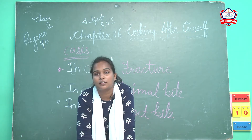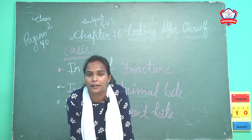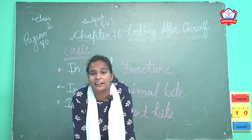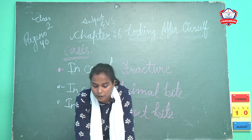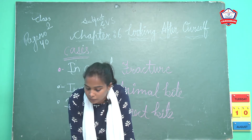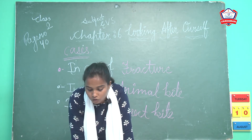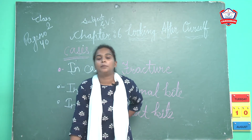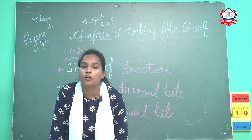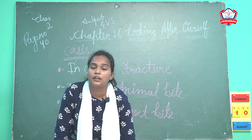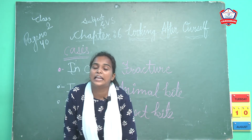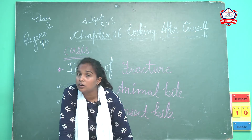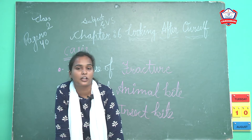Now come to the fourth case — all about animal bite. Kabhi bhi aapko animal bite kare — dog, cat, anything — in case of an animal bite, wash the wound with soap. Jahan pe bhi animal ne bite kiya hai, us area ko running water ke andar saboon se dhona chahiye — clean kar dena chahiye saboon se.